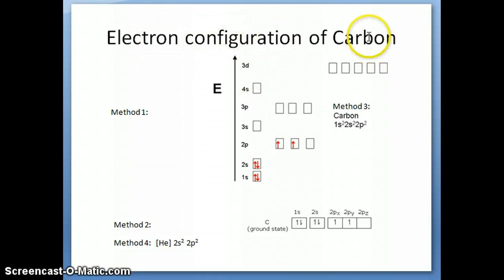So carbon, if you look up the periodic table, has an atomic number of six, which means that it also has six electrons in order to balance out the protons. There's several ways to write the electron configuration, and I'm writing this as different methods.